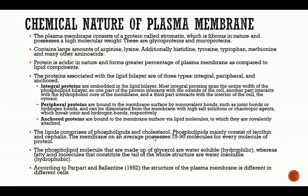Integral proteins are embedded in the lipid bilayer. Most integral proteins span the entire width of the phospholipid bilayer, meaning one part of the protein interacts with the outside of the cell, another part interacts with the hydrophobic core of the membrane, and a third part interacts with the interior of the cell — the cytosol. Peripheral proteins are bound to the membrane surface by non-covalent bonds such as ionic bonds or hydrogen bonds, and can be dissociated from the membrane with high salt solutions or chaotropic agents. Anchored proteins are bound to the membrane surface via lipid molecules to which they are covalently attached.